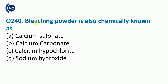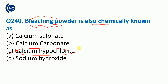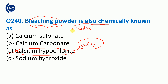The blue color is due to scattering. Bleaching powder's chemical name is calcium hypochloride. Sodium hydrogen carbonate is represented as Na2CO3. These are important chemical names to know.